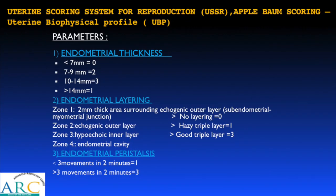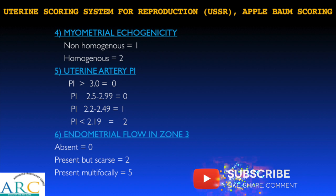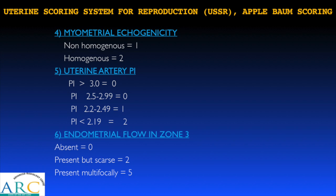The uterine scoring system, first described by Applebaum in 1995 — also known as the uterine biophysical profile score — uses seven parameters: endometrial thickness (score increases with thickness but decreases again above 14 mm); endometrial layering (no layering scores zero, well-defined triple layer scores three); endometrial peristalsis (score of three); homogeneous myometrial echogenicity (high score); uterine artery PI (2.5–3 scores zero, PI less than 2 scores two); endometrial flow in Zone 3 or multifocal (high score of five, scarce flow scores two).